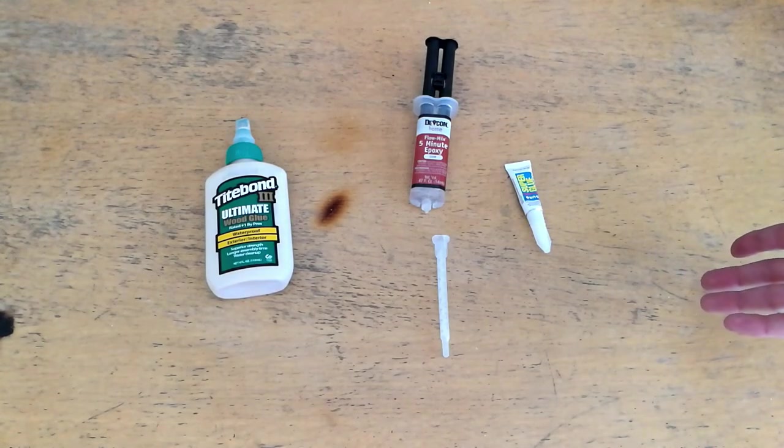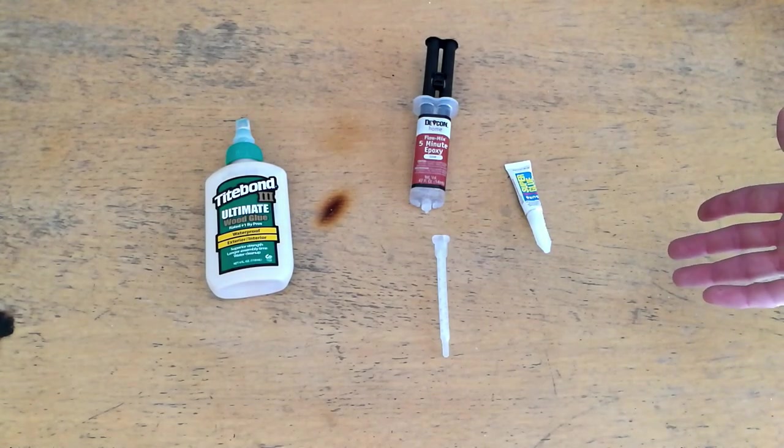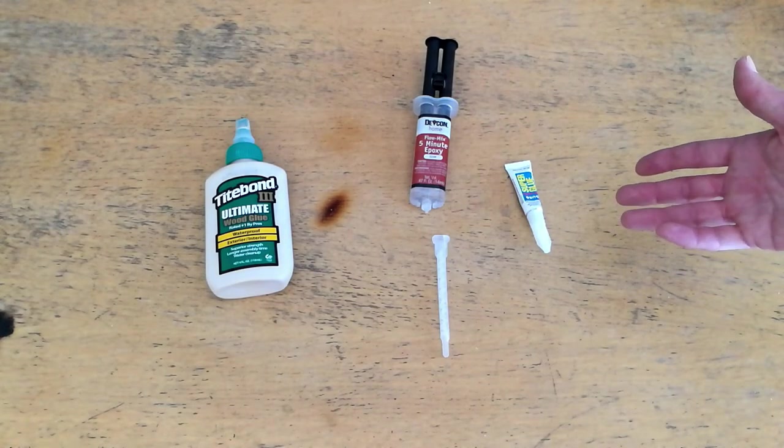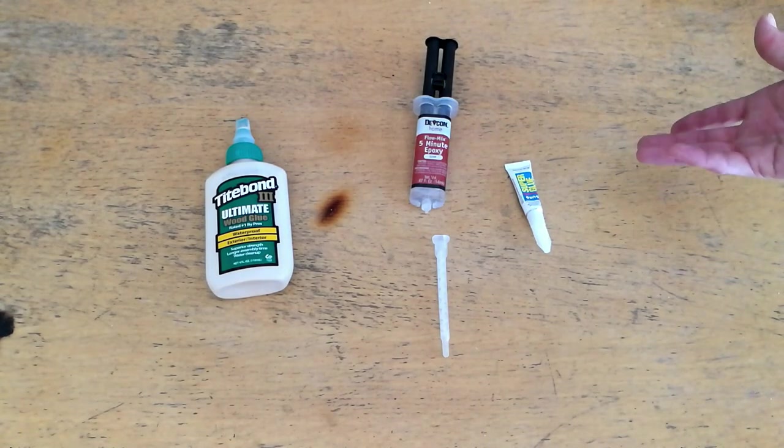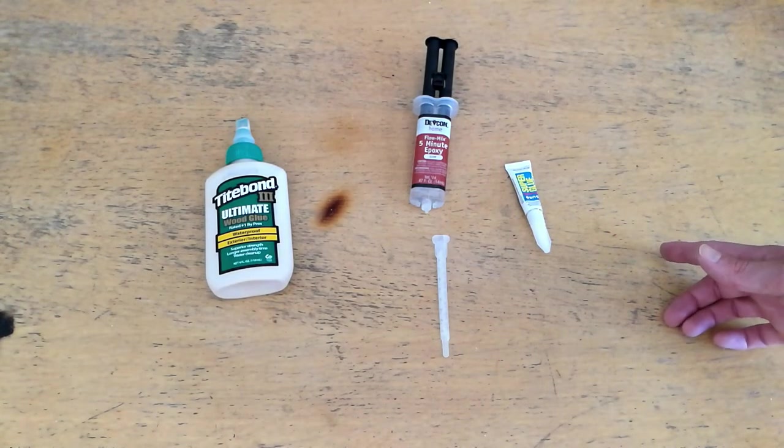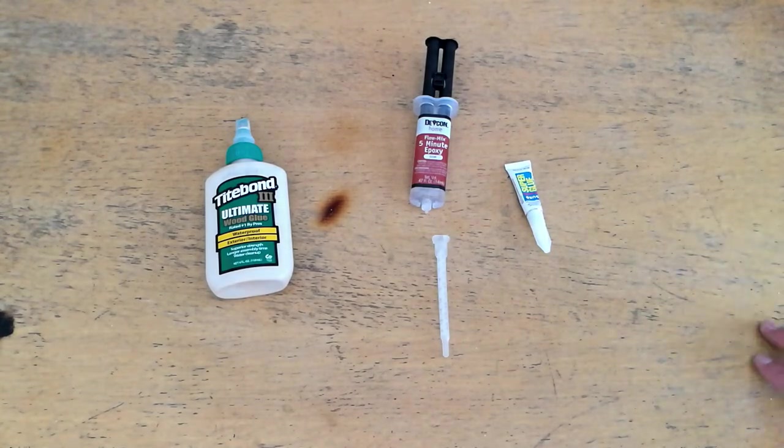Additionally, what I haven't shown here is a material called PVC solvent adhesive. It's effectively a solvent that melts the plastic of PVC pipe together and allows for pipe to be strongly bonded together. It doesn't really work very well for other materials, however, so I didn't show it on this bench.